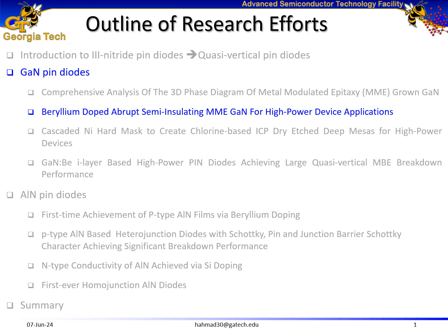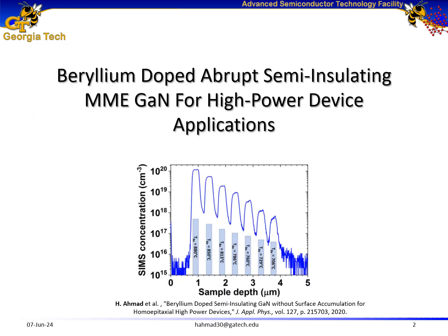Next, I wanted to focus on the i-layer of PIN diodes. I wanted to reduce the background doping concentration to achieve higher breakdown performance for PIN diodes. In this regard, I performed a study on beryllium-doped abrupt semi-insulating MME gallium nitride for high-power device applications.